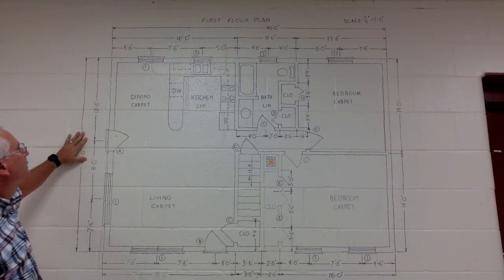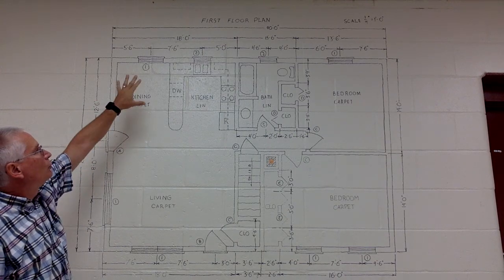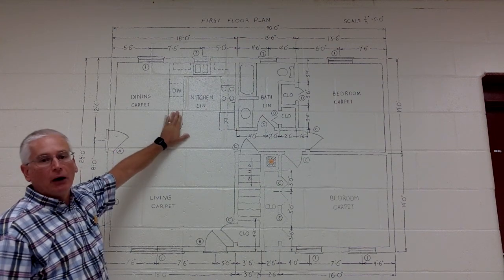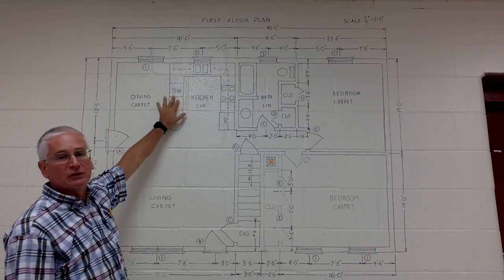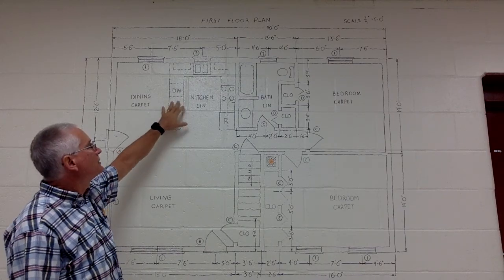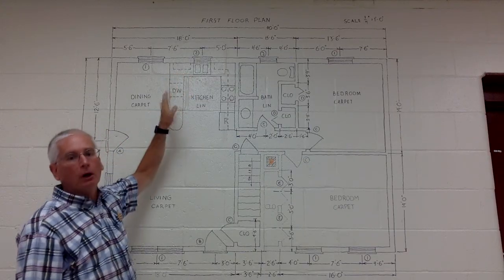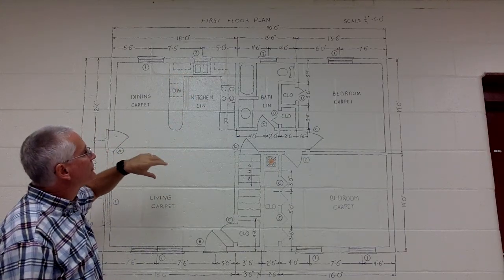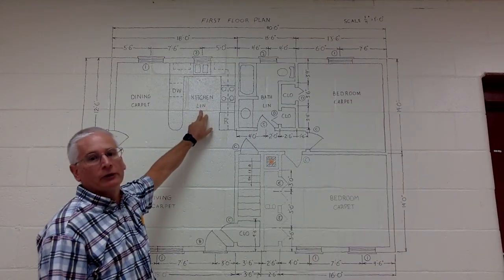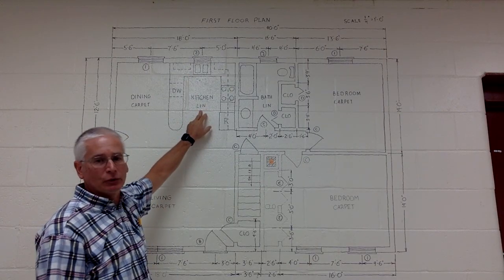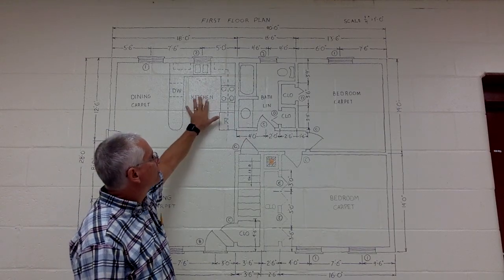Dining room — carpet in this particular dining room. Window symbol on the outside. This would be a bar or countertop in the kitchen. This is the kitchen. DW stands for dishwasher — dash lines mean it's underneath the countertop. Dash lines here indicate a wall cabinet on the wall in this kitchen. Stove, refrigerator, and sink symbol.